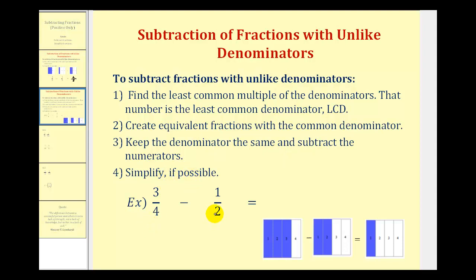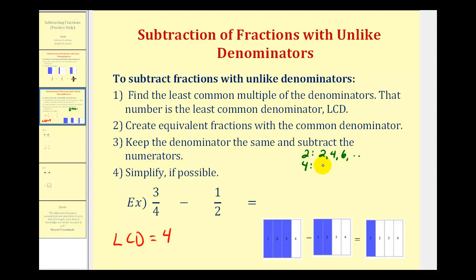So for three-fourths minus one-half, we first need to find the least common multiple of four and two, which is the smallest number divisible by both four and two. And this would be four. We can also list multiples of two — two, four, six, and so on — and multiples of four — four, eight, twelve, and so on. Notice how four is the least common multiple.